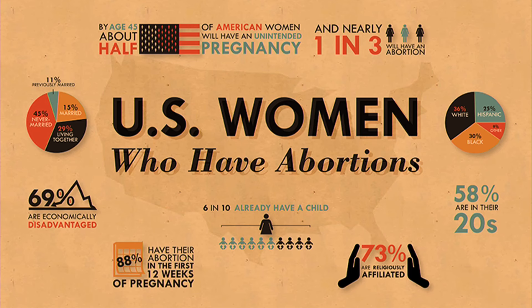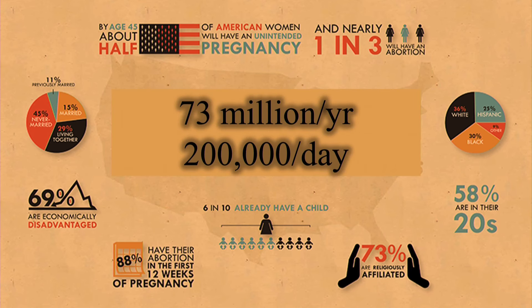By the age of 45, about one in three couples in the United States will have had an abortion. Very troublingly, 73% of abortions are by people with religious affiliations. The World Health Organization reported in 2021 that there are around 73 million reported abortions performed per year worldwide — about 2.3 children per second. In the United States alone, there are nearly one million abortions performed per year — about one every 32 seconds.